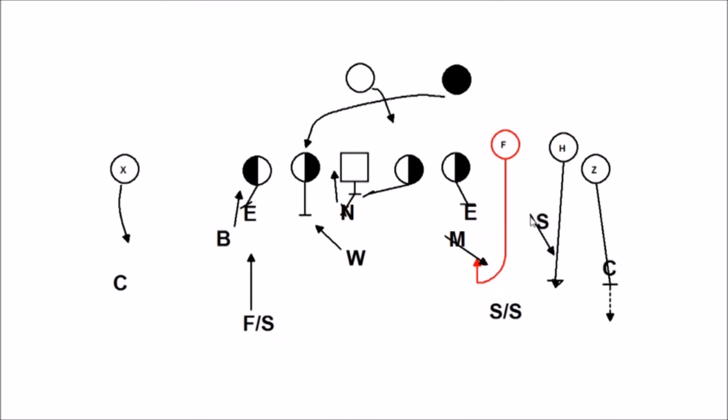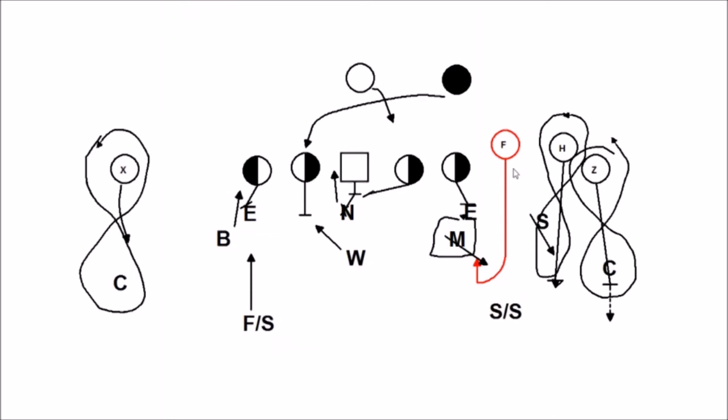But the Sam or the Nickelback, and now a lot of people are playing Nickelbacks in this case, but the Nickelback would bump out to play man on number two here. You have man up on the widest receivers with the corners. Okay, now, the Mike, who really is the read for the RPO, he would get under that tight slot or the number three receiver to the trip side, and he'd have help with the strong safety.